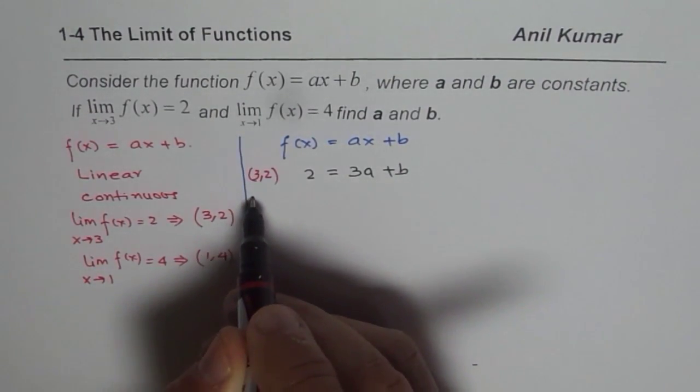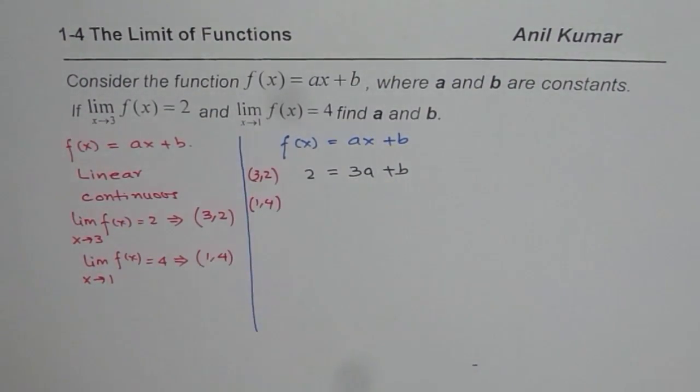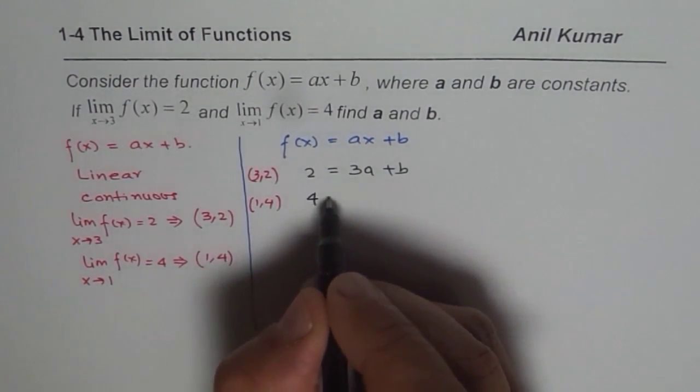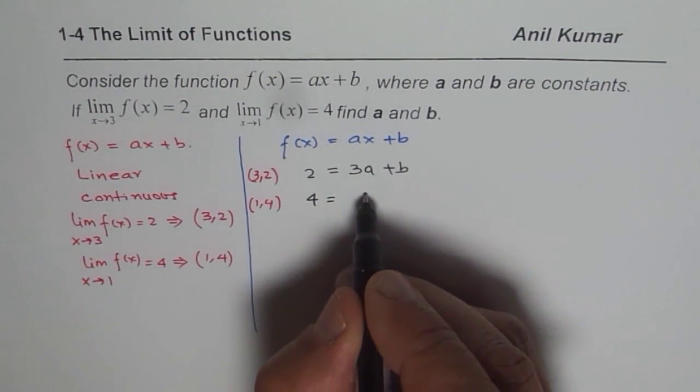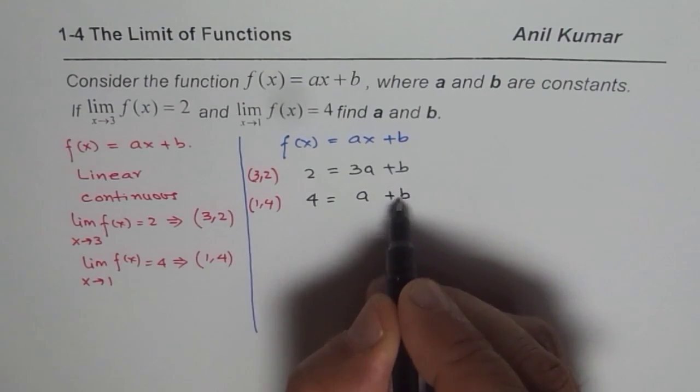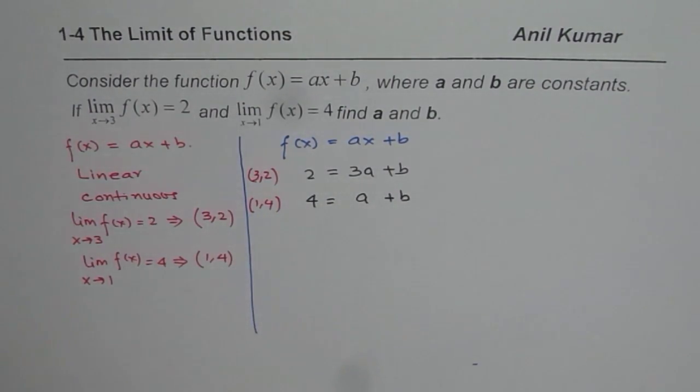And now let us use the value 1 and 4. So in that case, 4 is the y value. So we get 4 equals 1 for x, that means a plus b. So we get two different equations.